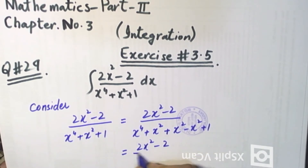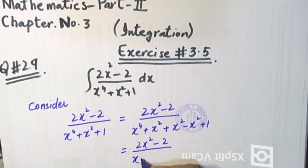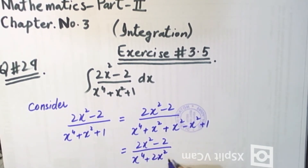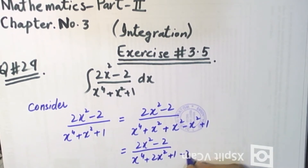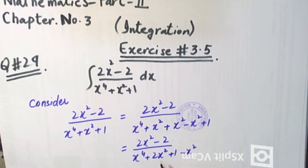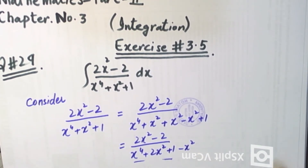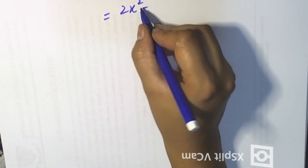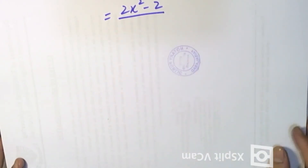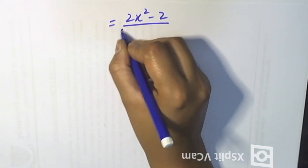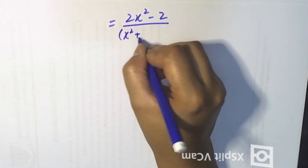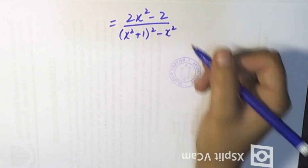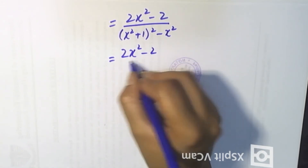(2x² - 2) over x⁴ + 2x² — rearranging: (x² - 2) over (x² - 2), and further over (x²)(x² + 1).